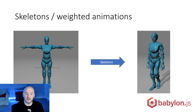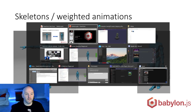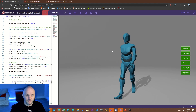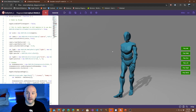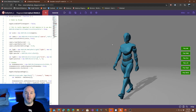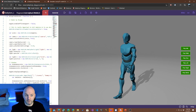For instance, the white lines are a representation of the skeleton, and this skeleton will apply a deformation — a transformation — into the mesh. Let's have a look at the demonstration: this is a moving skeleton applied to a mesh.